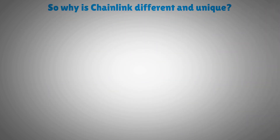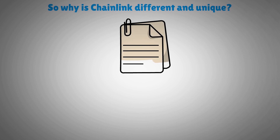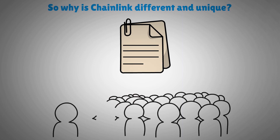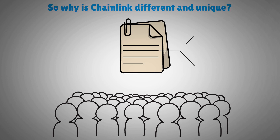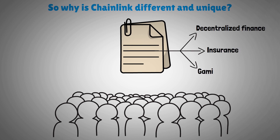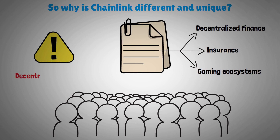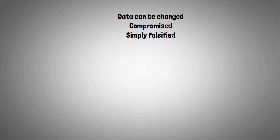So why is Chainlink different and unique? Chainlink is one of the first networks to allow the integration of off-chain data into smart contracts. Managed by a global, decentralized community of hundreds of thousands of people, the Chainlink network currently secures billions of dollars in value for smart contracts across the decentralized finance, insurance, and gaming ecosystems. Chainlink established a safe bridge where the blockchain meets the outside world, which was a big risk in decentralized applications. The points at which data enters the blockchain are also the points at which data can be changed, compromised, or simply falsified — it is at these points of failure that Chainlink generates value.